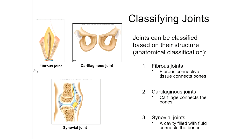When we talk about classifying joints, there are a couple of different systems for doing this. The first way is based on their structure — how they're put together — and this is known as the anatomical classification. When we classify articulations based on the way they're put together, they fall into three different categories.